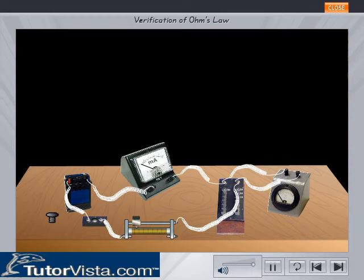Shown here is a circuit with a suitable voltmeter for measuring the potential difference V across a resistance box Q, and a milliammeter for measuring the current I flowing through the resistance box. A rheostat is used for varying the current and potential difference in the circuit.